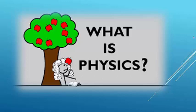Science is mainly divided into two branches: physical science and biological science. Physical science deals with non-living things and biological science deals with living things. Physical science is again divided into two branches — physics and chemistry. Now let us concentrate only on the subject physics.